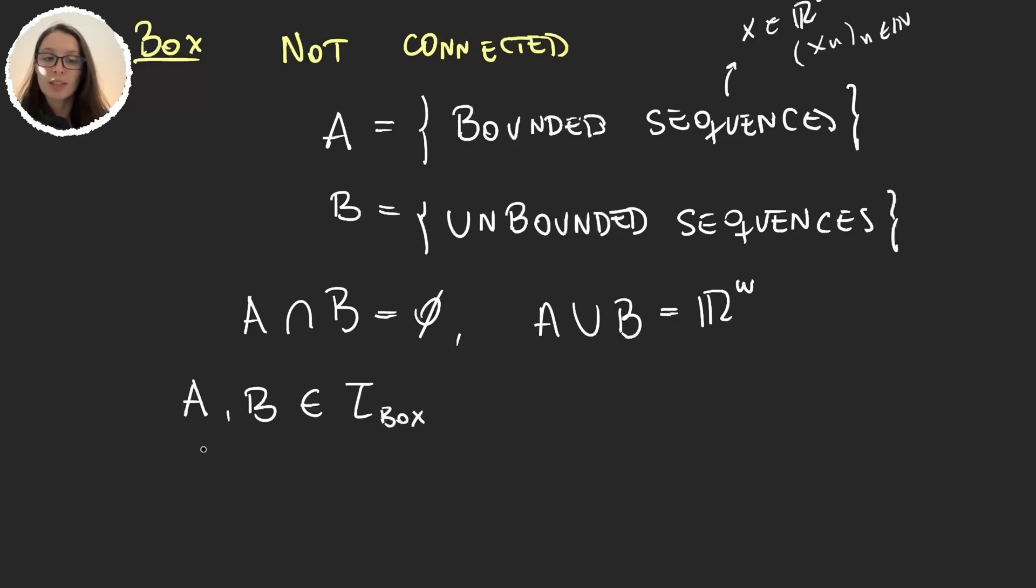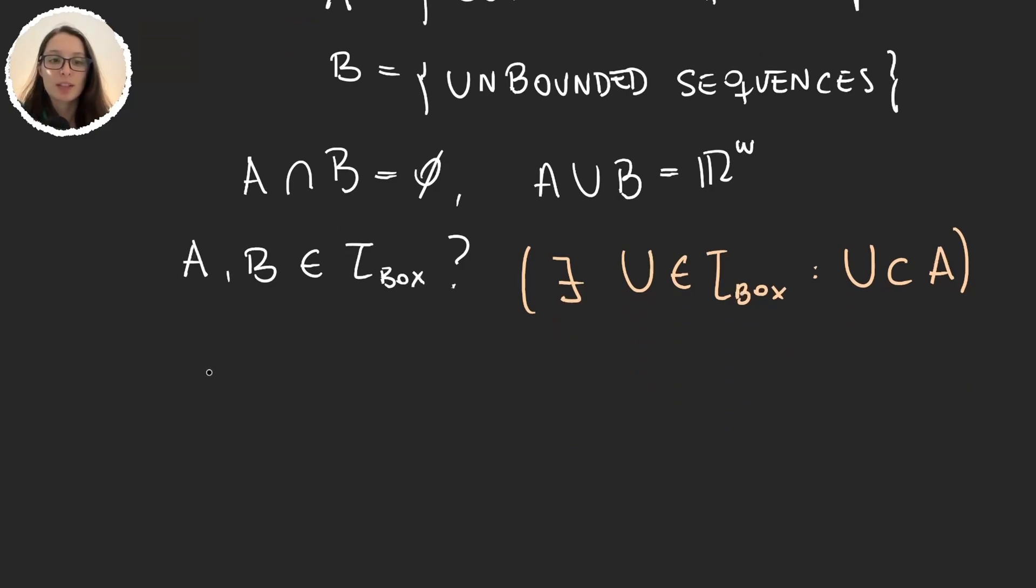To prove that the set A is open we will prove that there is another element in the box topology that is inside A. So this is what we are asking ourselves and we will prove that there exists U in the box topology such that U is a subset of A. But this is very simple. We will take an element A in A, so a bounded sequence A is formed by A_n.